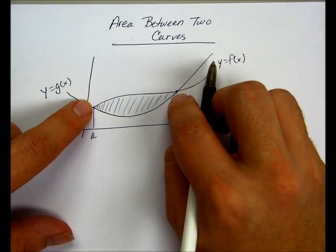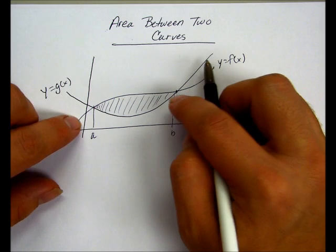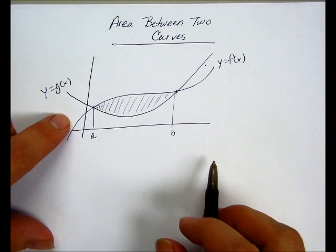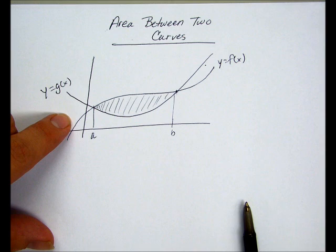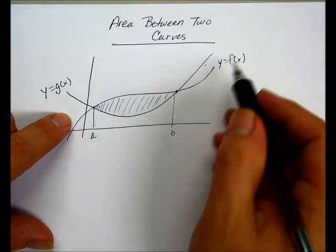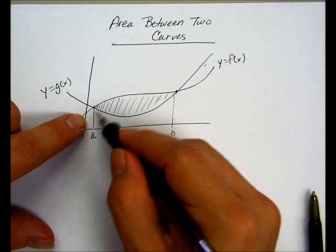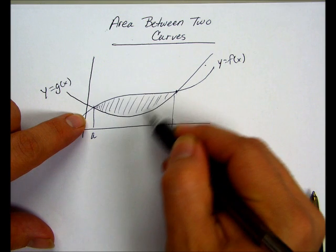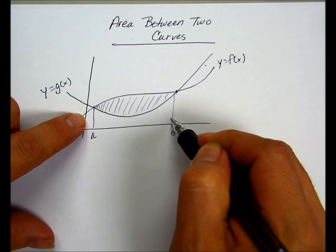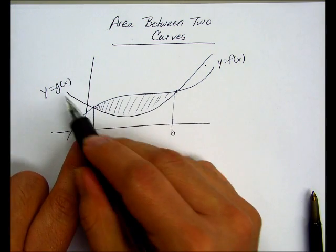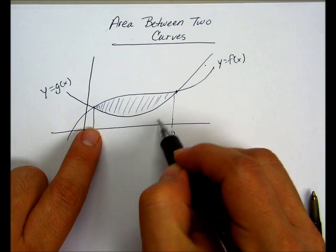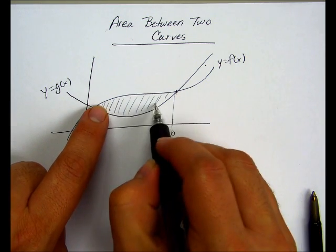So what we're going to need to find out is where they intersect. If you think of it this way, if we found the area under f of x, which would be all this area, we would need to subtract the area under g of x, and that would give us the area in between.